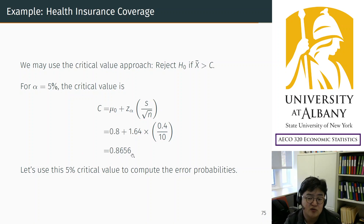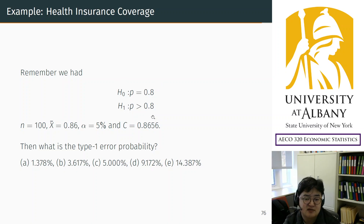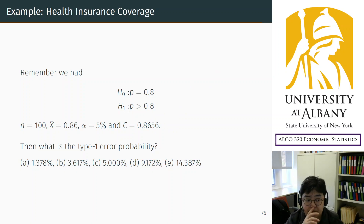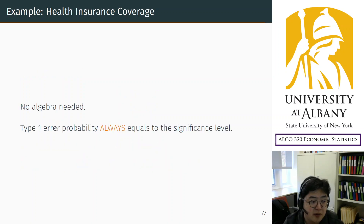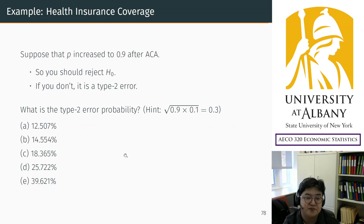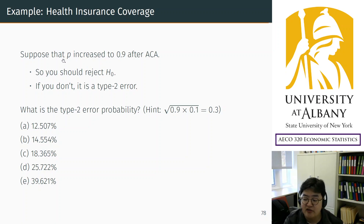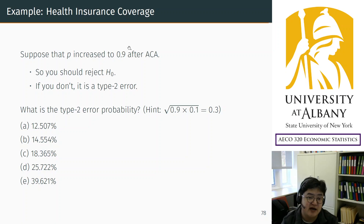Now let's use this critical value to calculate the error probabilities — the idea is the same. We use the null and alternative hypotheses. First, Type 1 error probability: the answer is simply the significance level — you don't need any algebra. Type 1 error probability is always the significance level. For Type 2 error, we assume that the health insurance coverage actually increased to 90% after the policy change. If you cannot detect that increase from the data, you are making a Type 2 error.